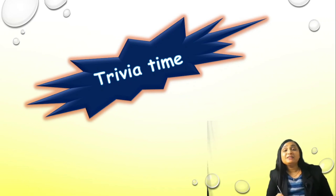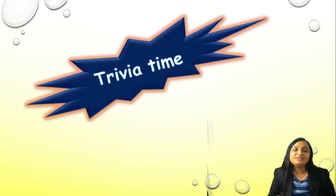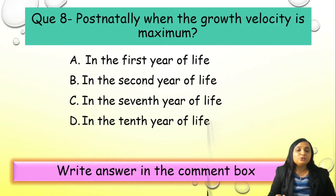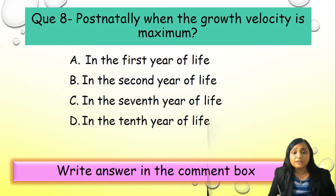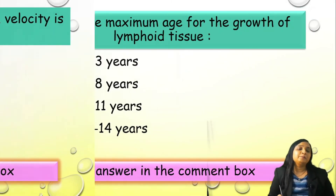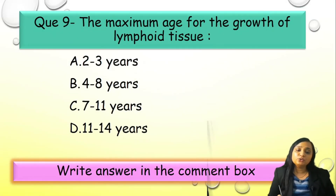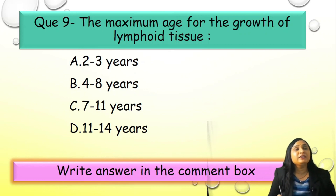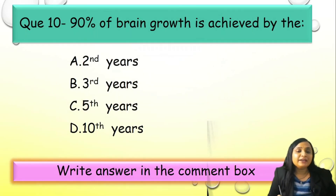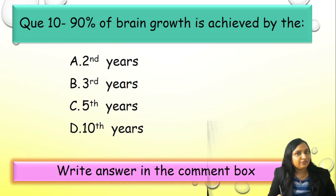Now again, it is the last trivia time. I suggest either write in the comment box or in a copy. Question 8: postnatally, when is the growth velocity maximum — A) in the first year, B) in the second year, C) in the seventh year, or D) in the tenth year? Question 9: the maximum age for the growth of lymphoid tissue — A) 2 to 3 years, B) 4 to 8 years, C) 7 to 11 years, or D) 11 to 14 years? Question 10: 90% of the brain growth is achieved by — A) 2nd year, B) 3rd year, C) 5th year, or D) 10th year?